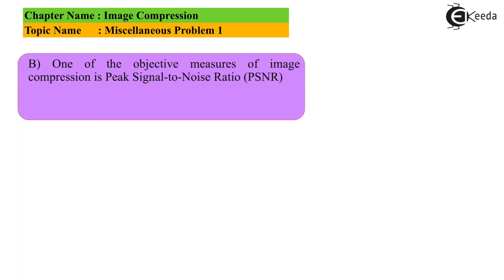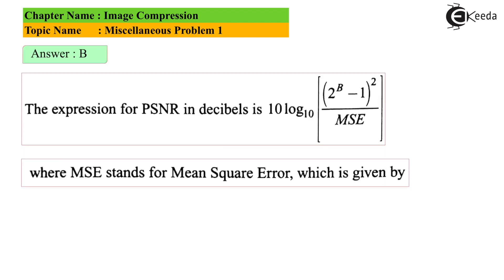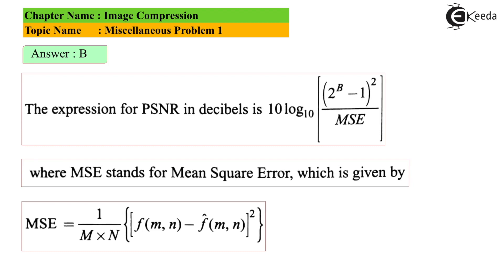For Part B, PSNR is an objective measure of image compression quality. The expression for PSNR in decibels is: 10 × log base 10 of [(2^B − 1)² / MSE]. If expressed directly without decibels, we use the square bracket term as is. The denominator MSE stands for mean square error.